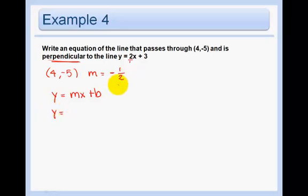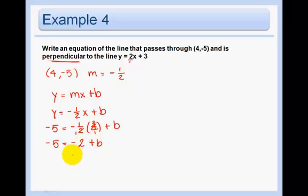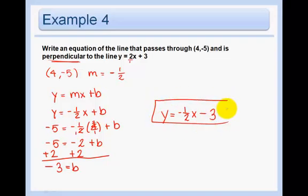y equals the slope is negative 1 half. Now for our perpendicular line. And we have a point. Negative 5 equals negative 1 half times 4 plus b. Negative 5 equals, well this is 4 over 1. So we can cross those out. I got a 2 on the top. Negative 1 times 2 is just negative 2. And I need b on a side all by itself. So add 2 to both sides. And my answer is y equals negative 1 half x minus 3. That's it.